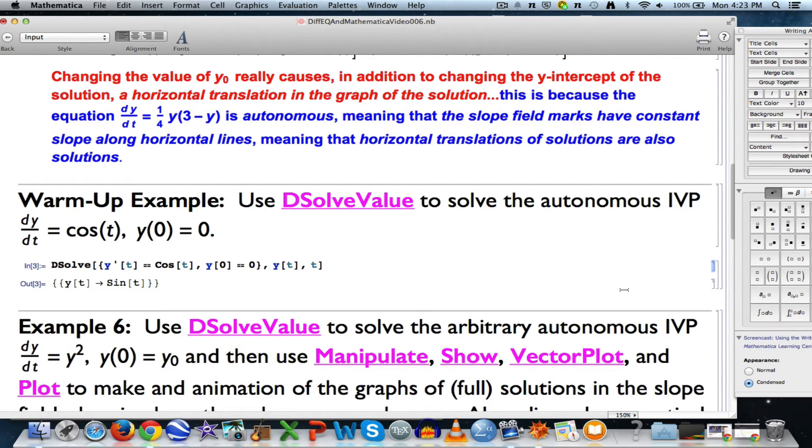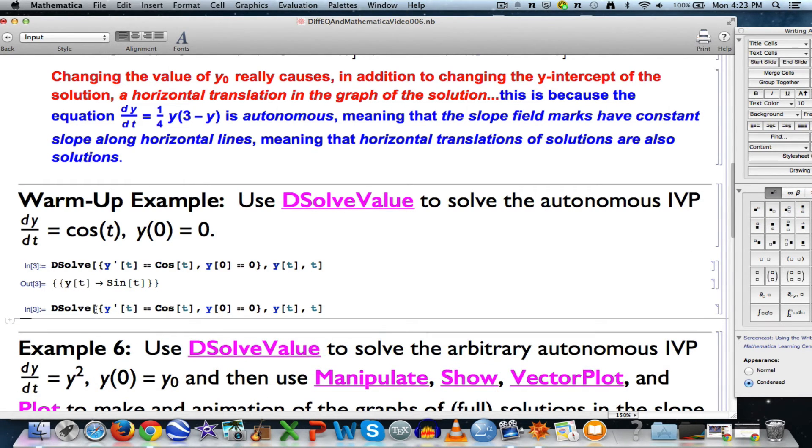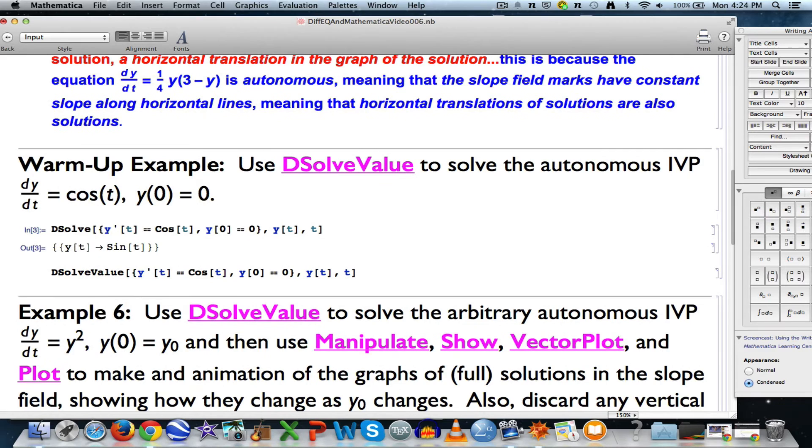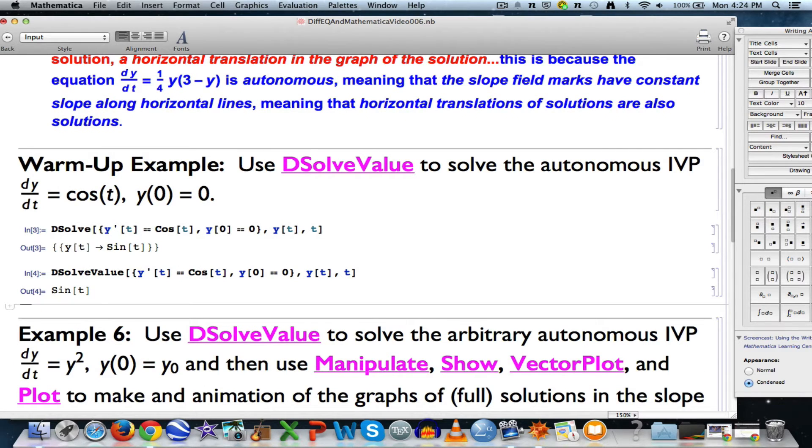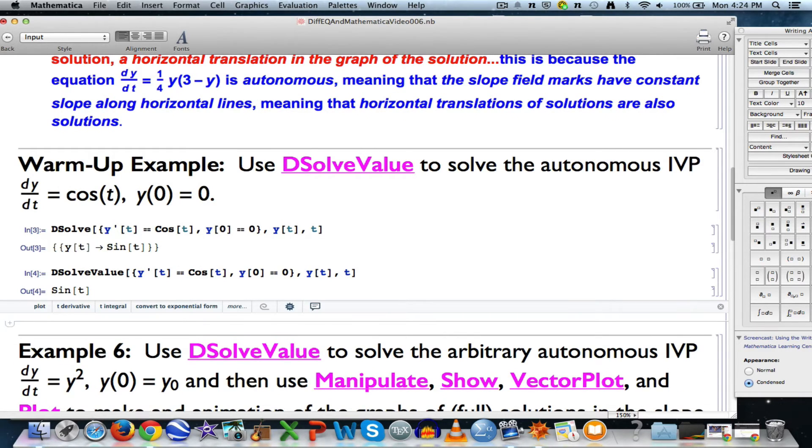Well, DSolveValue will do that as one nice thing it does. The input is still the same. I just change DSolve to DSolveValue. And now the output is just outputted as sine of t. So that's one way it's nice.